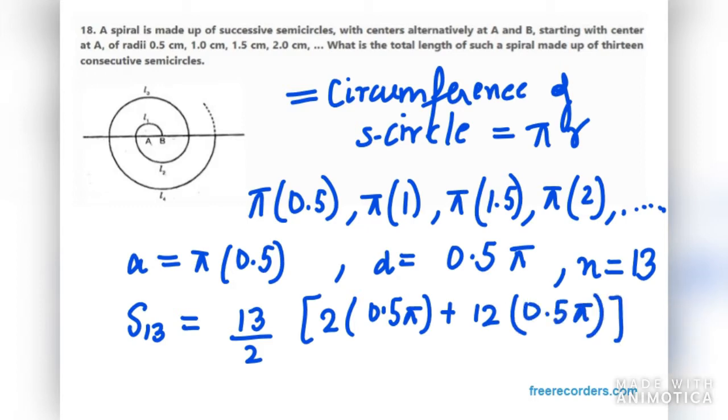d in this case is 0.5π. So 13 over 2 into, in bracket, 1π plus 12 into 0.5, that is 6π. So 13 over 2 into, in bracket, 7π.